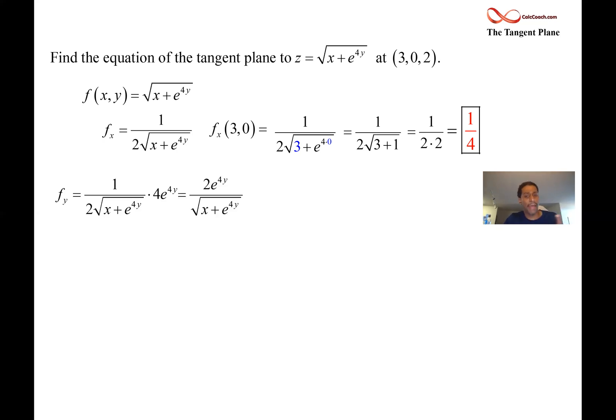We plug 3 and 0 into that. We could actually cancel the 4 and the 2 out if you want. You don't have to, but you could. When we plug the 3 and the 0 into that, the square root is going to be 2 still. e to the 0 is going to be a 1 times the 2. It's going to be 2 over 2. It's going to be a 1.